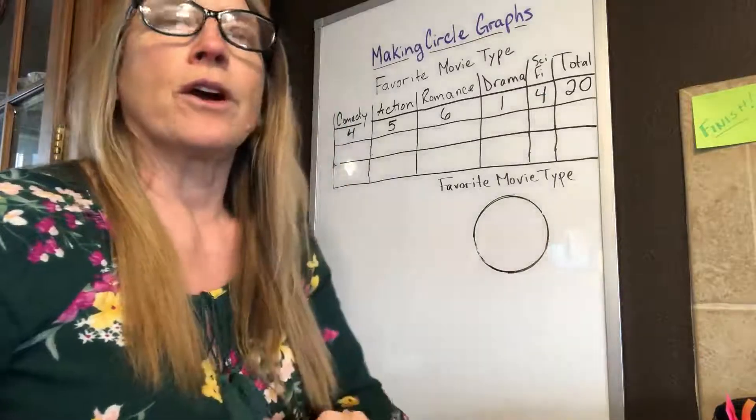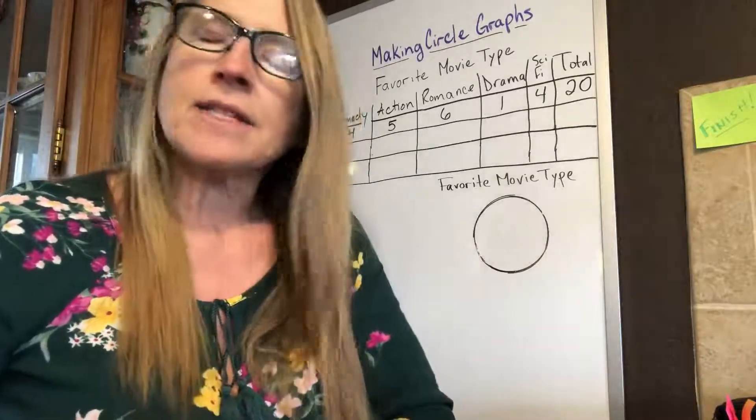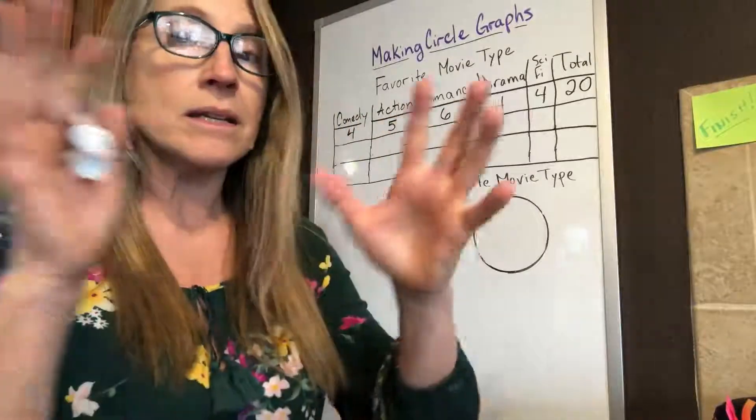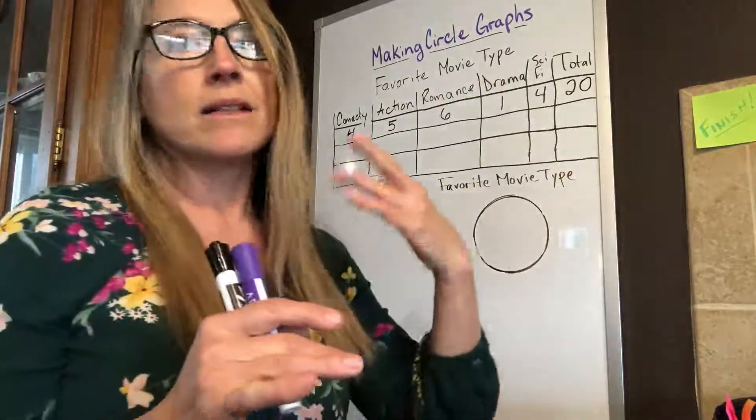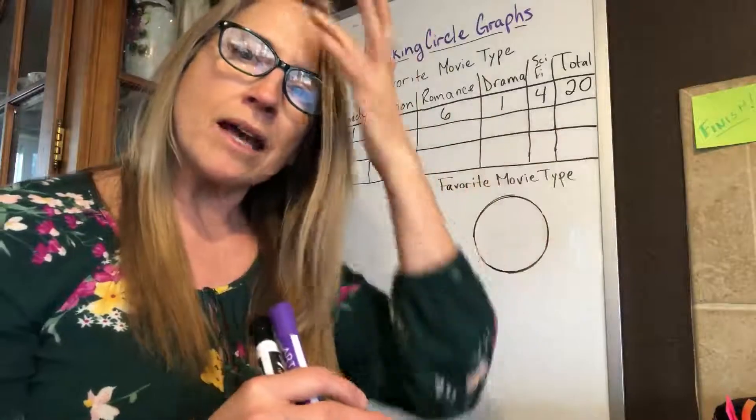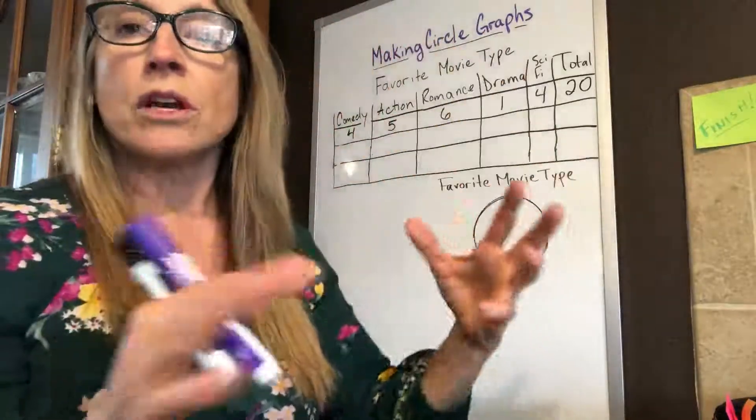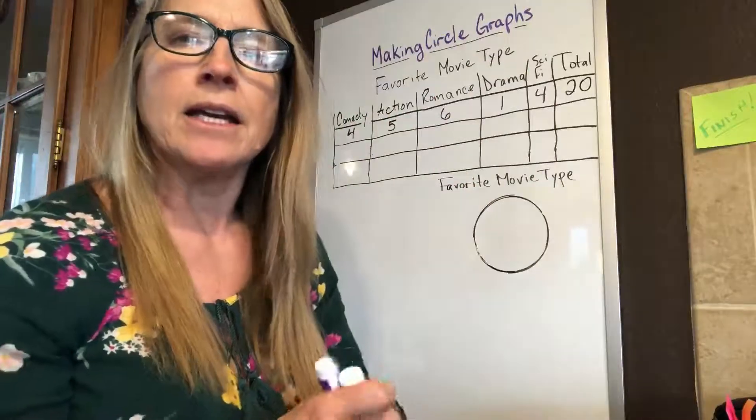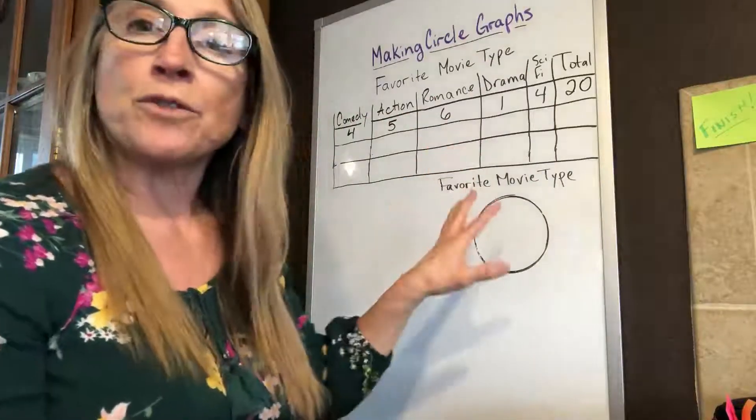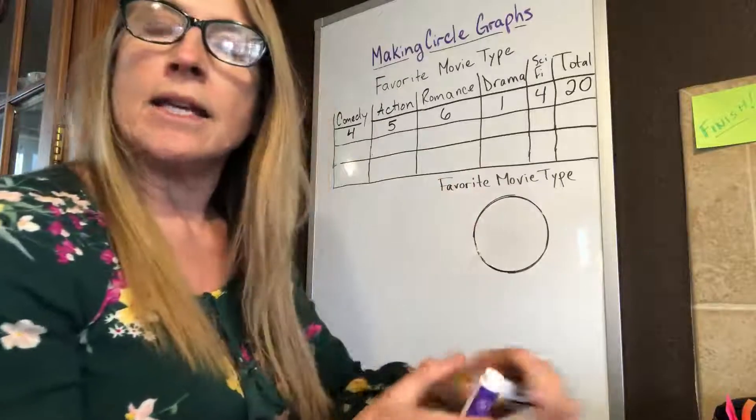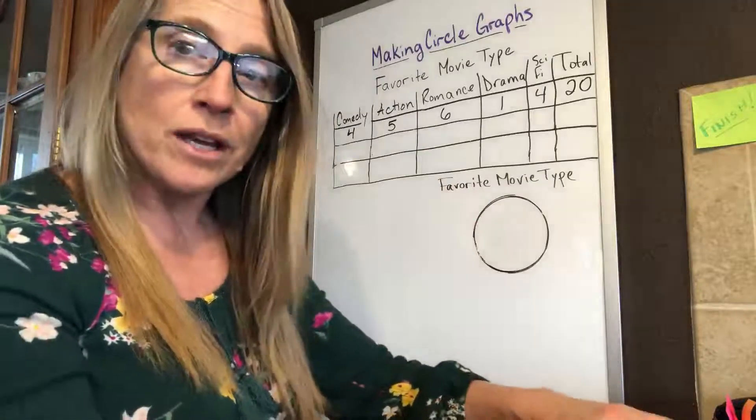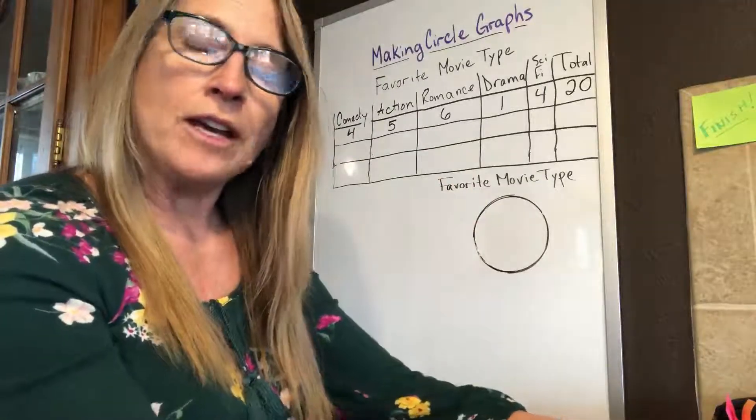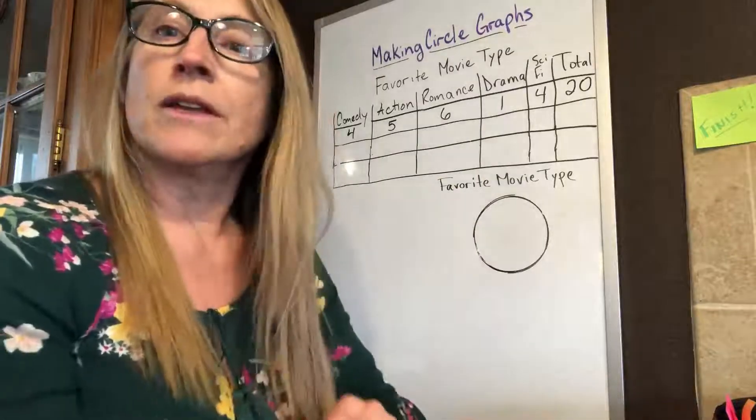Circle graphs are great for showing relative sizes because it's easy to see at a glance what is most liked or what is least liked or what has the most relative to the rest of the shape of the graph. I have a couple of examples. The first one I'm going to work for you, and the next one I'm going to ask you to pause the video so you can try it out yourself.